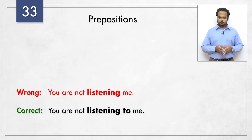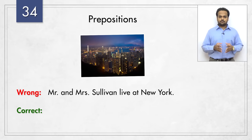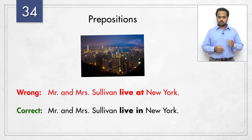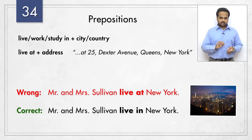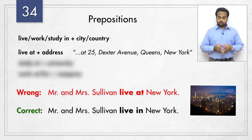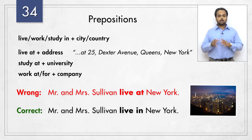Next – 'Mr. and Mrs. Sullivan live at New York' is wrong because it needs to be 'live in New York.' For permanent situations like living, working or studying in a city or country, we use the preposition 'in.' But we use 'at' when we talk about living at an address – 'Mr. and Mrs. Sullivan live at 25 Dexter Avenue, Queens, New York,' for example. If you are a student, you study at a university. If you work, you can work at or for a specific company – both prepositions are OK.